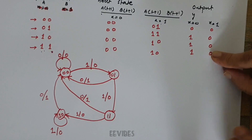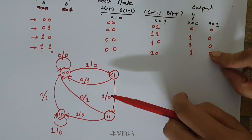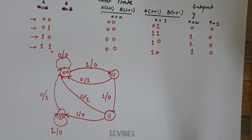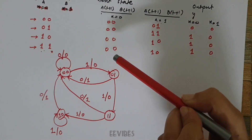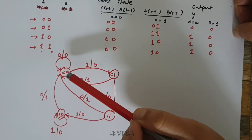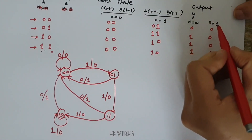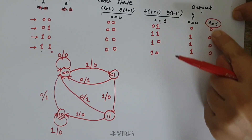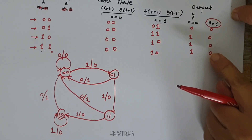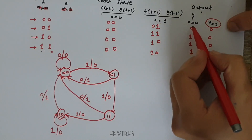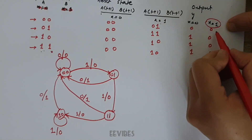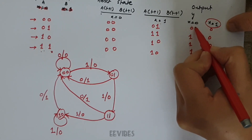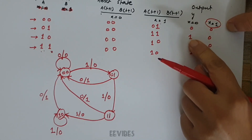Using the state table we draw the state diagram like that. Now let's see the interpretation of the state diagram. As long as input x is equal to 1, the output function is actually equal to 0. And within the string of inputs, when x is equal to 0 — or the first 0 is detected — the output function is equal to 1.